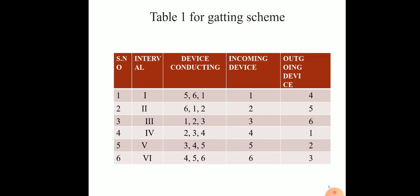Step 4: devices conducting are 2, 3, 4. Incoming device is 4, outgoing device is 1. Step 5: thyristors 3, 4, 5 conduct. Incoming device is 5, outgoing device is 2. Step 6: thyristors 4, 5, 6 conduct. Incoming device is 6, outgoing device is 3.